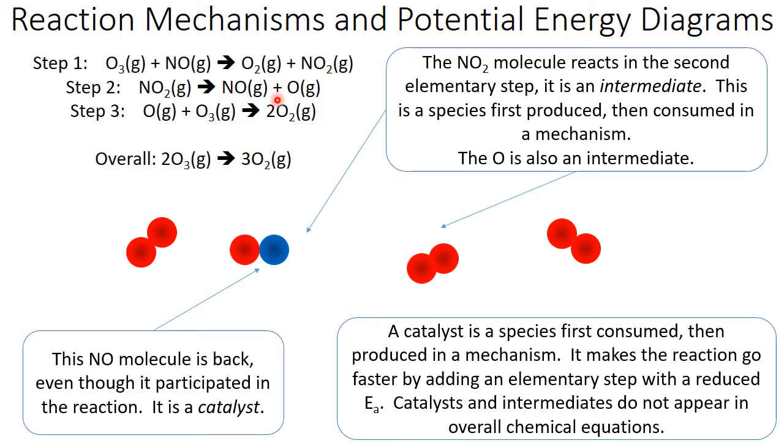Catalysts make reactions go faster by adding an elementary step with a reduced activation energy barrier. Neither catalysts nor intermediates appear in overall chemical equations. And you see this here. Our catalyst NO and our intermediates NO2 and O don't show up in that overall reaction equation of ozone becoming oxygen.